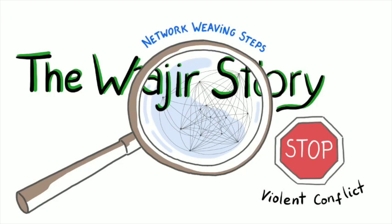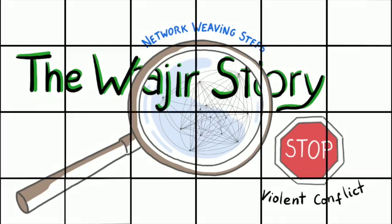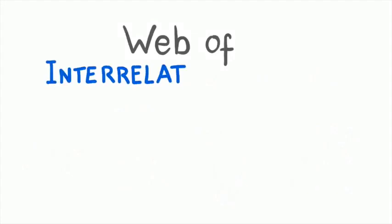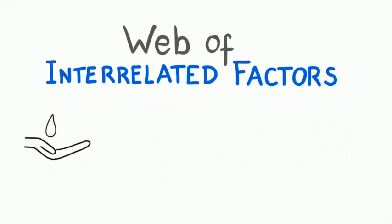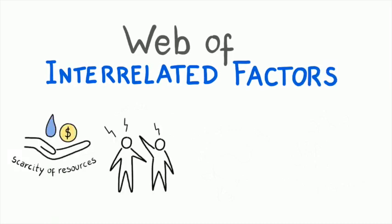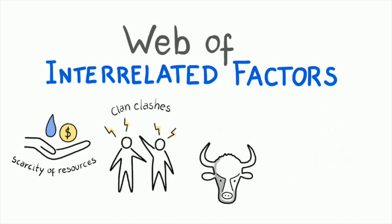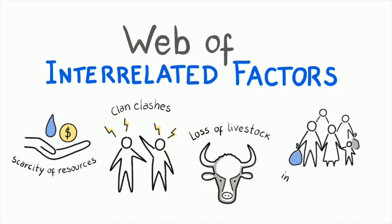We start by recognizing that the problems that originated the eruption of violent conflict in Wajir around 1992 were a product of a web of interrelated factors over which the average citizen has little or no control. A pastoralist society suffering from scarcity of resources, clan clashes, loss of livestock, influx of refugees from neighboring regions, among others.